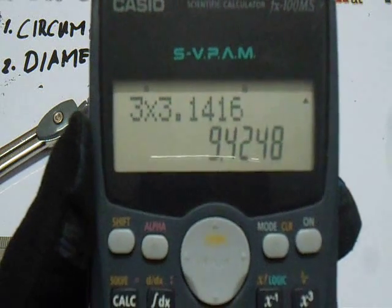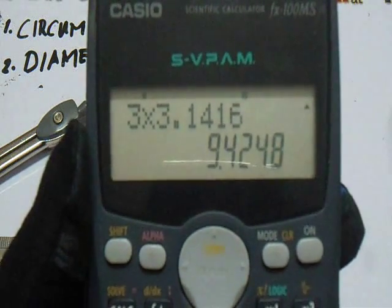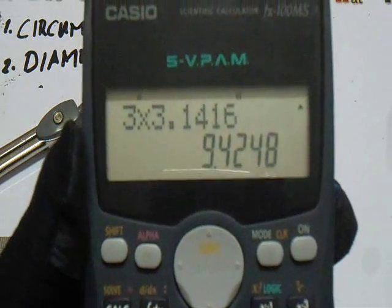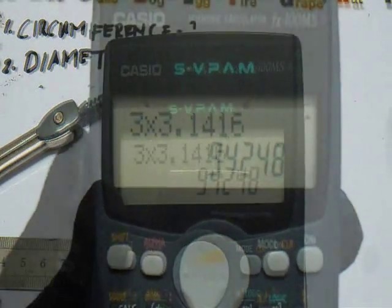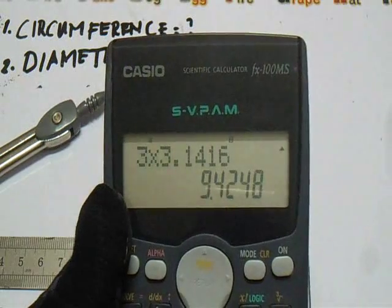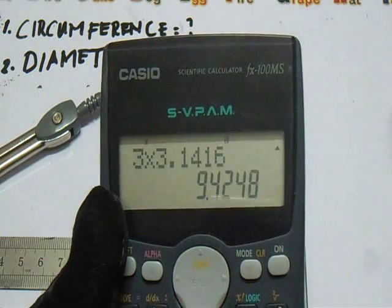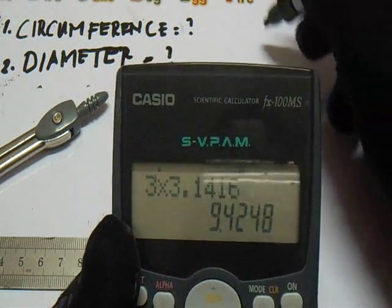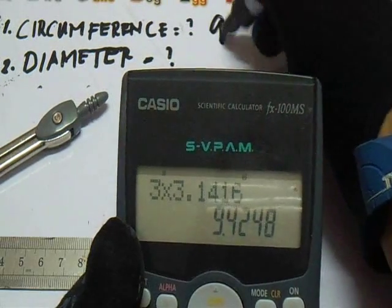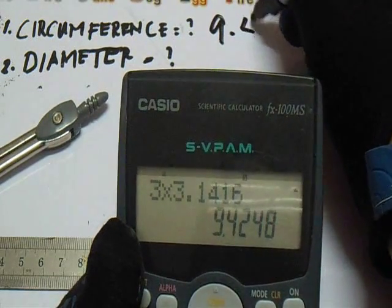So, this is the answer of the circumference. Our circumference is 9.4248. This is our circumference, 9.42.